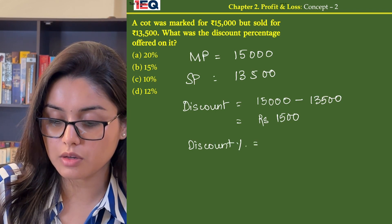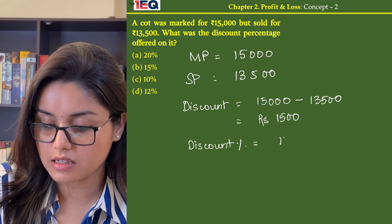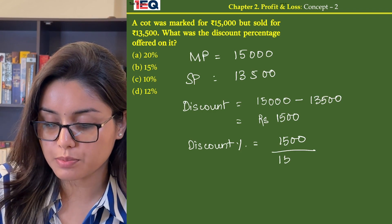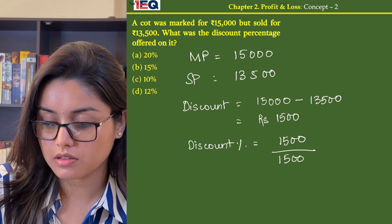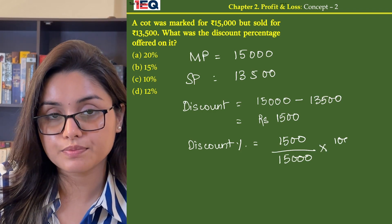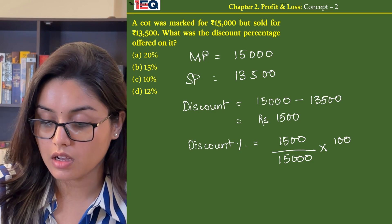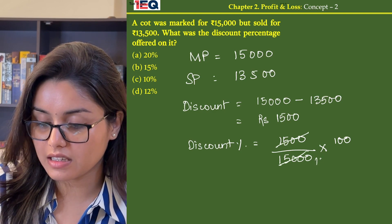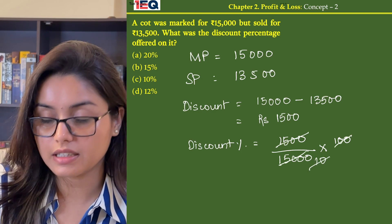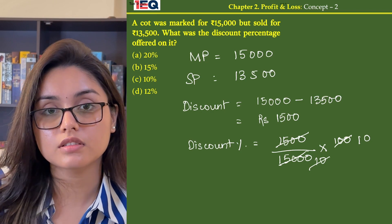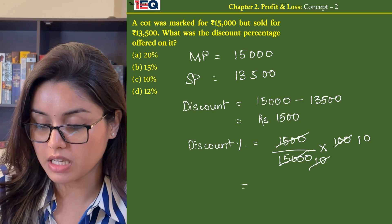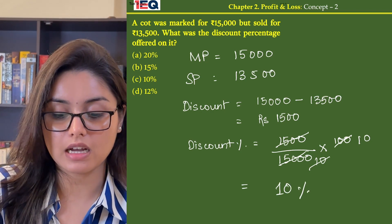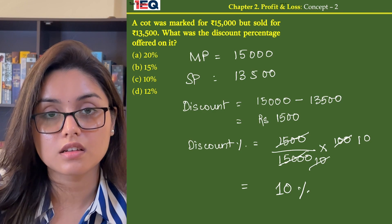Now, the discount percentage is equal to discount divided by marked price, multiplied by 100. That is 1,500 divided by 15,000, multiplied by 100. So the discount percentage is 10%, and the answer is C.